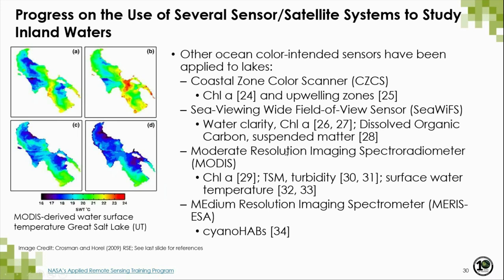Other ocean color-intended sensors have also been applied to lakes. In the early days, the Coastal Zone Color Scanner, or CZCS, was used for chlorophyll a and detecting upwelling zones. SeaWiFS, the Sea-Viewing Wide Field-of-View Sensor, has been used for water clarity and detecting chlorophyll a and other parameters, as well as MODIS and MERIS for detecting similar parameters in the water column. The image on the left shows a series of MODIS-derived surface water temperature measures for the Great Salt Lake in Utah, where Level 2 one-kilometer data was obtained using MODIS bands 31 and 32 in the infrared region.